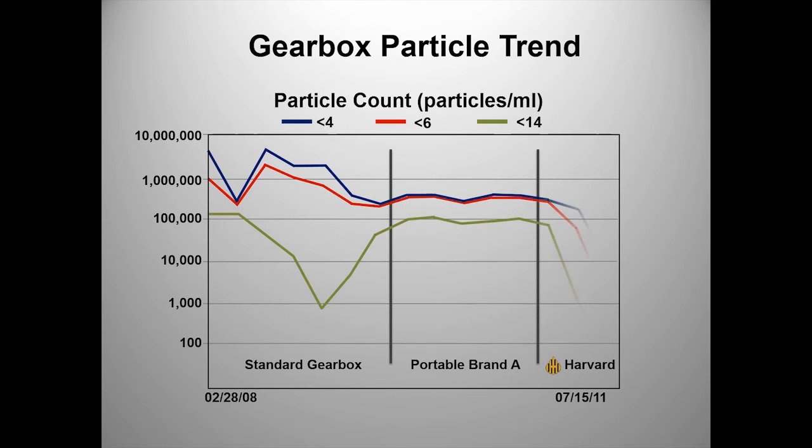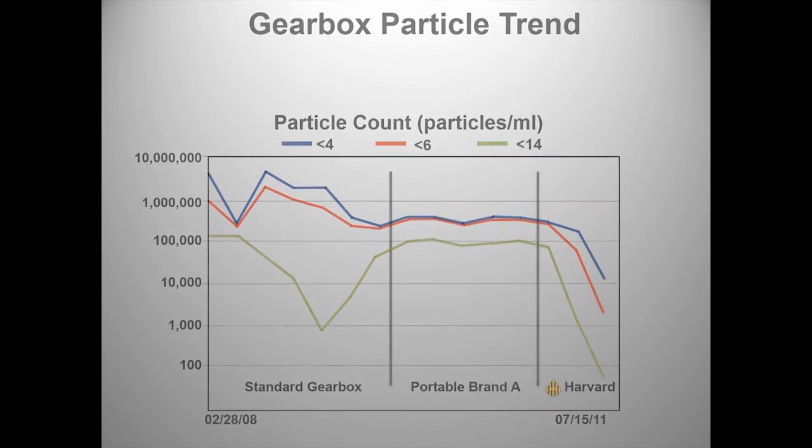Other filters couldn't bring the particle count below 100,000 particles per milliliter, but adding the Harvard filter cut the particle count by over 90%, reducing the count of particles under 4 microns to just over 10,000 and particles under 14 microns to less than 100.